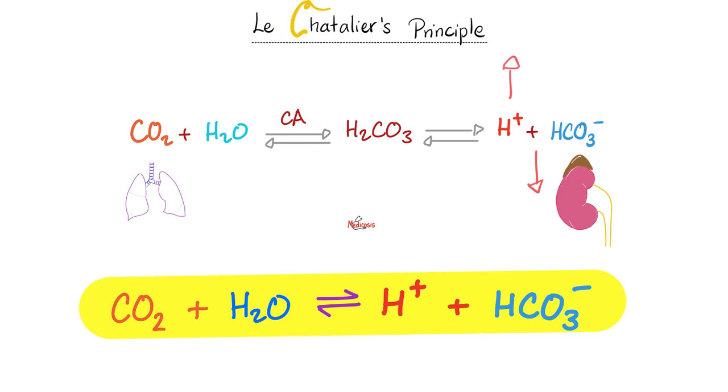Conversely, assuming that this side of the equation cannot change, if HCO3 went up, H is going to go down. And that's why when I have metabolic alkalosis, H is going to decrease because it's an alkalosis. HCO3 is going to increase. Le Chatelier's, baby.